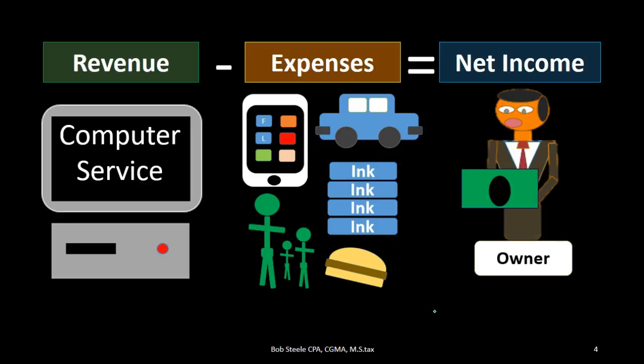Revenue minus expenses is going to be the net income, and that's going to increase equity. The owner here is receiving the net income. It doesn't mean the owner is necessarily going to pull out that income, but what it does mean is that the company — the separate sheet of paper — now owes the owner more money by the revenue minus the expenses that was generated for that month, that time period.